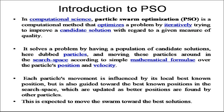As an introduction to PSO, in computational science, Particle Swarm Optimization is a computational method that optimizes a problem by iteratively trying to improve a candidate solution with regard to a given measure of quality. It solves a problem by having a population of candidate solutions — dubbed particles — and moving these particles around the search space according to simple mathematical formulas over the particle's position and velocity. Each particle's movement is influenced by its local best known position, but is also guided toward the best known position in the search space, which is updated as better positions are found by other particles. This is expected to move the swarm towards the best solution.